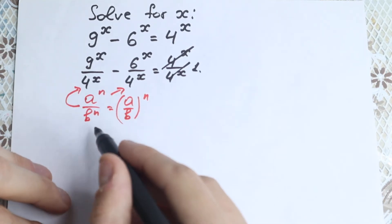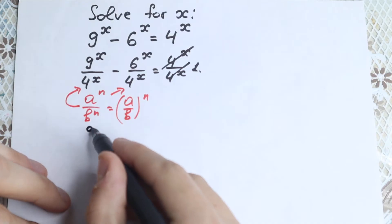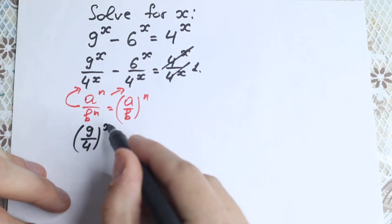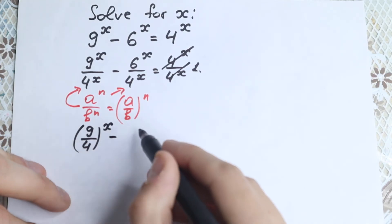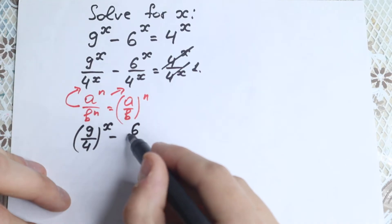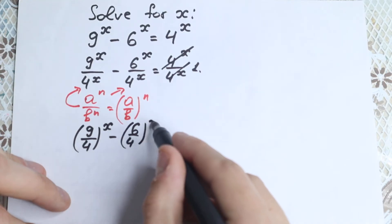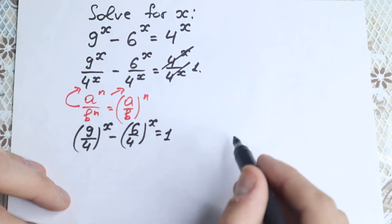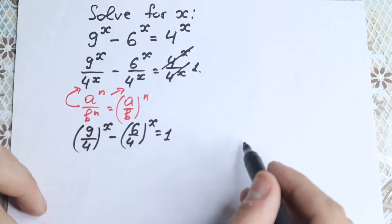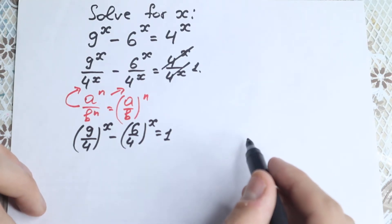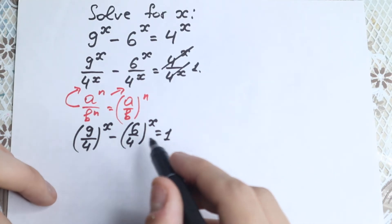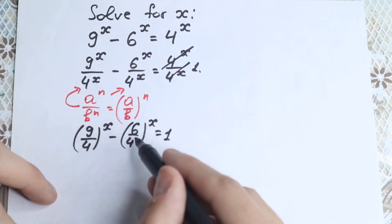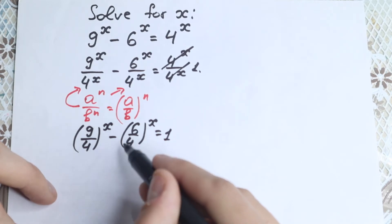Let's do this. We will have 9 over 4, to the power x, minus 6 over 4, to the power x, equal to 1. And if you look closely, 6 over 4 can be simplified by 2, so we will have 3 over 2.